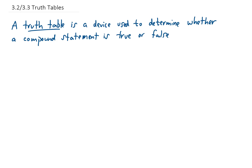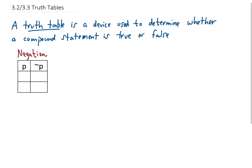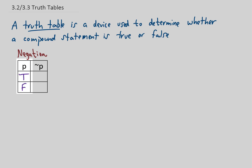A truth table is a device used to determine whether a compound statement is true or false. Let's start by looking at the most basic truth table: the negation. So p represents some statement, and that statement can either be true or false. We list all those possibilities in the truth table for p. If the statement p is true, then its negation must be false. And if the statement p is false, then its negation must be true.